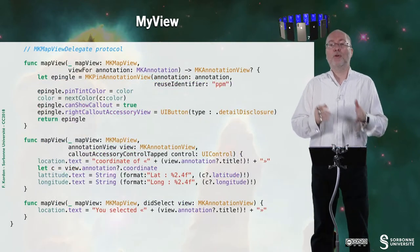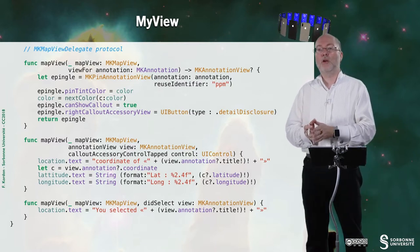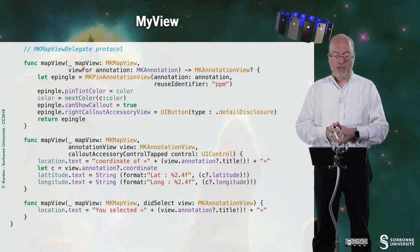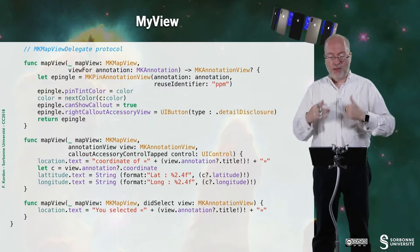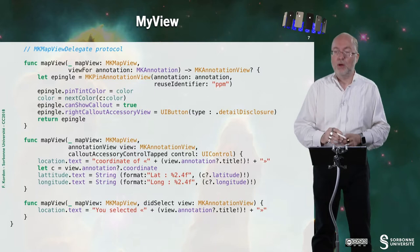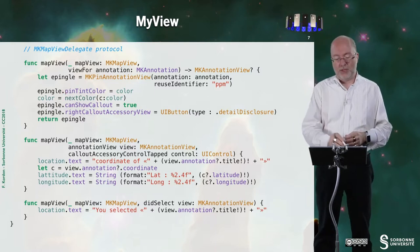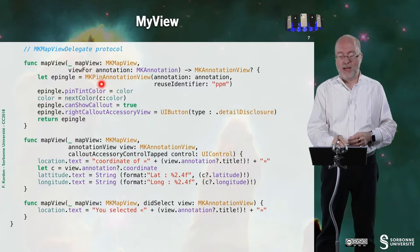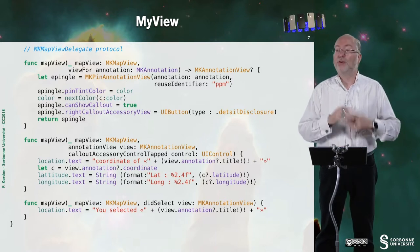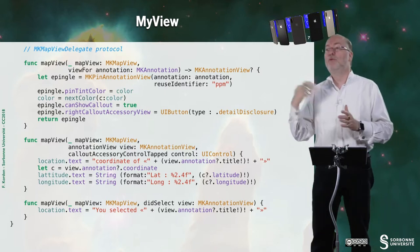And I also have to answer to some methods of the map view delegate protocol. So here this is what I do if there is a new annotation. So here I prepare this view. So this view is first a pin, an éping in French, and set up the tint color with the current color. The default one is orange. Then I move to the next color. So there is a round robin.